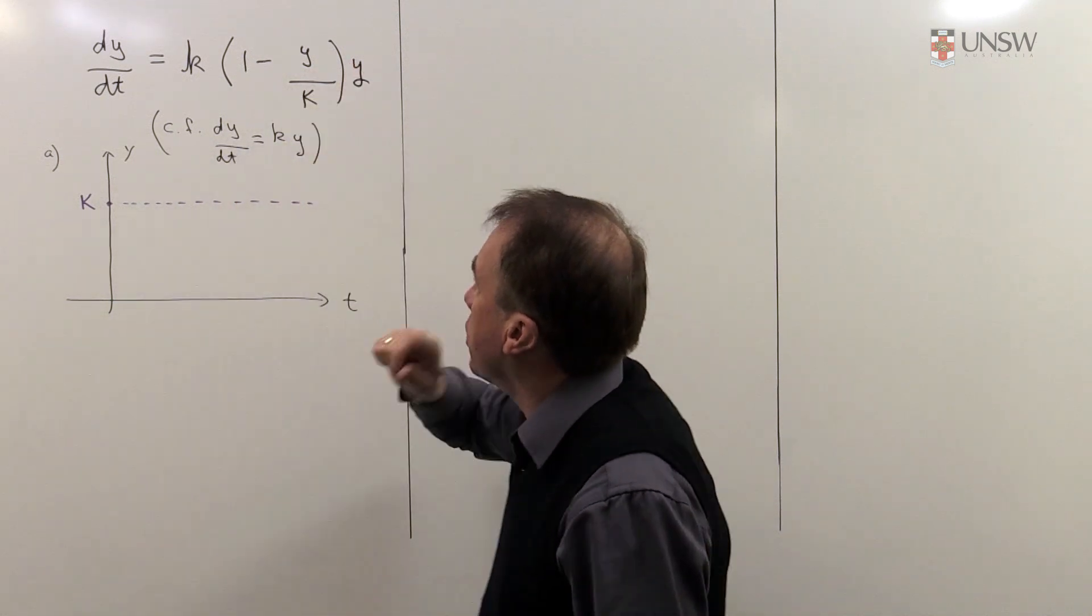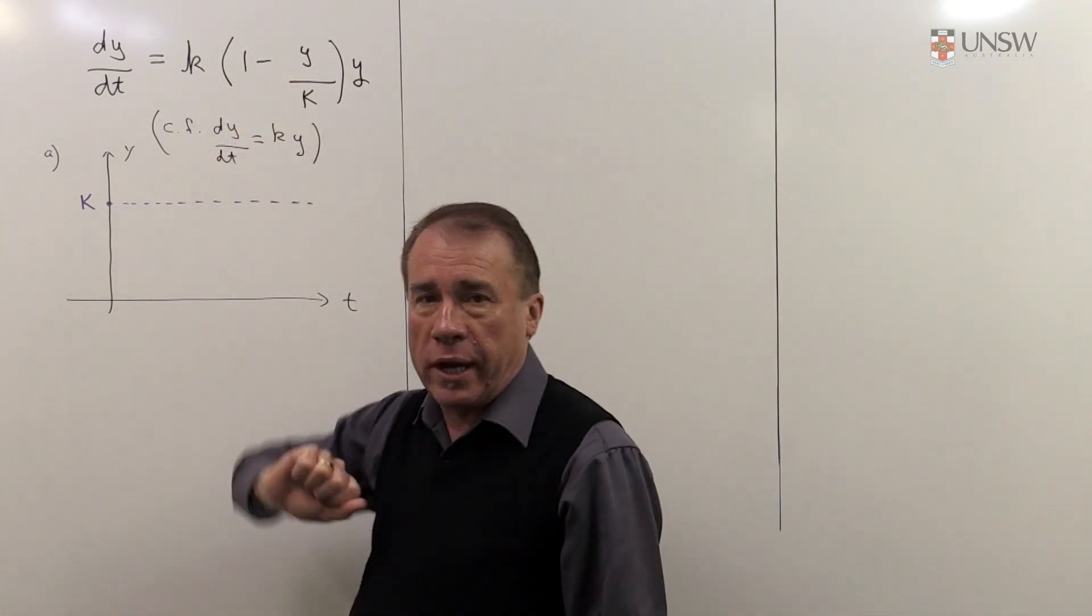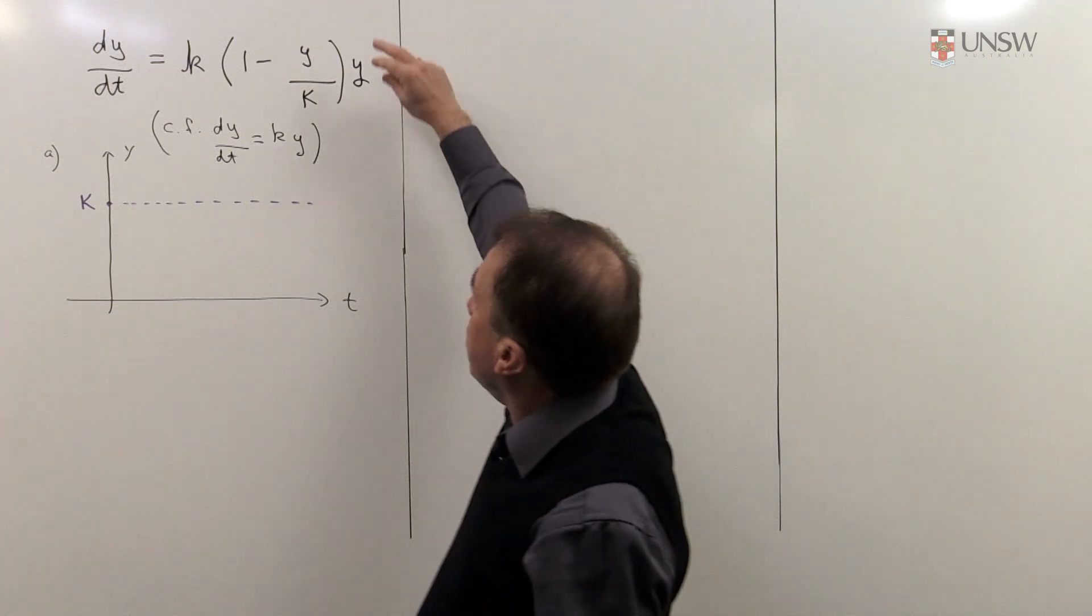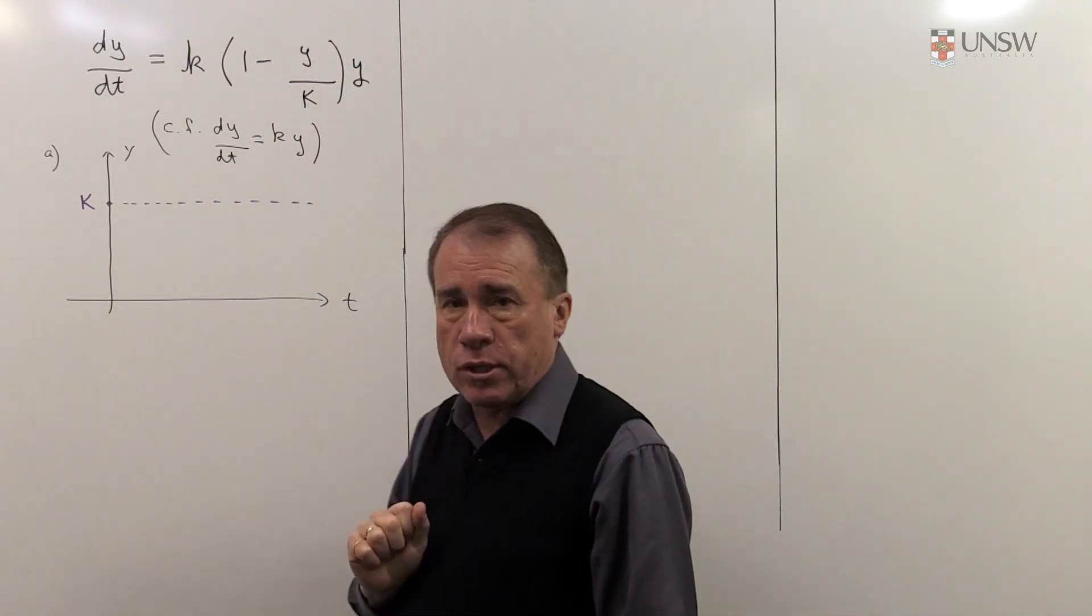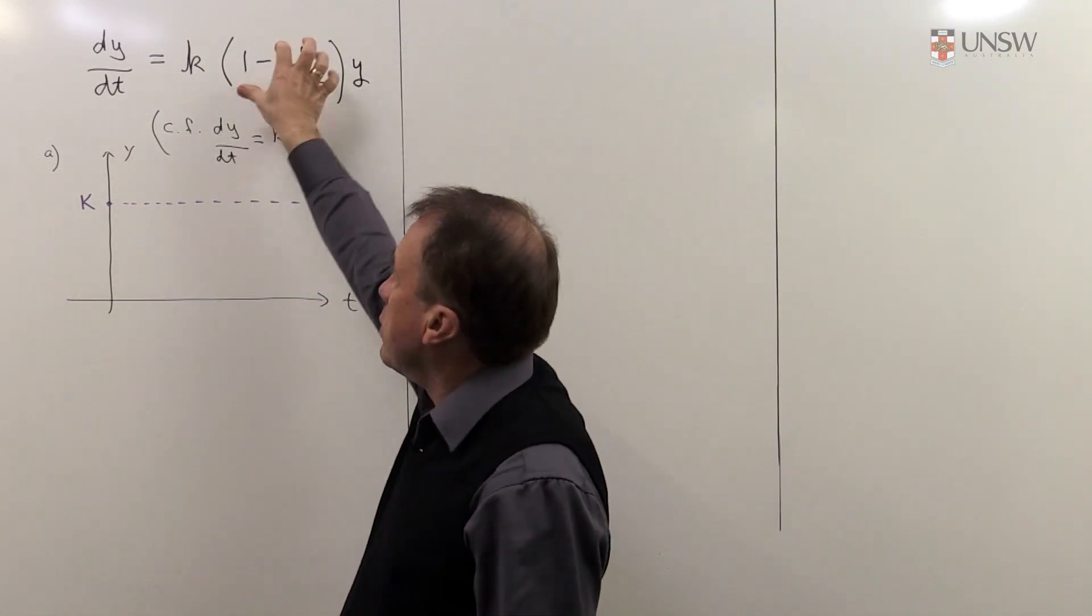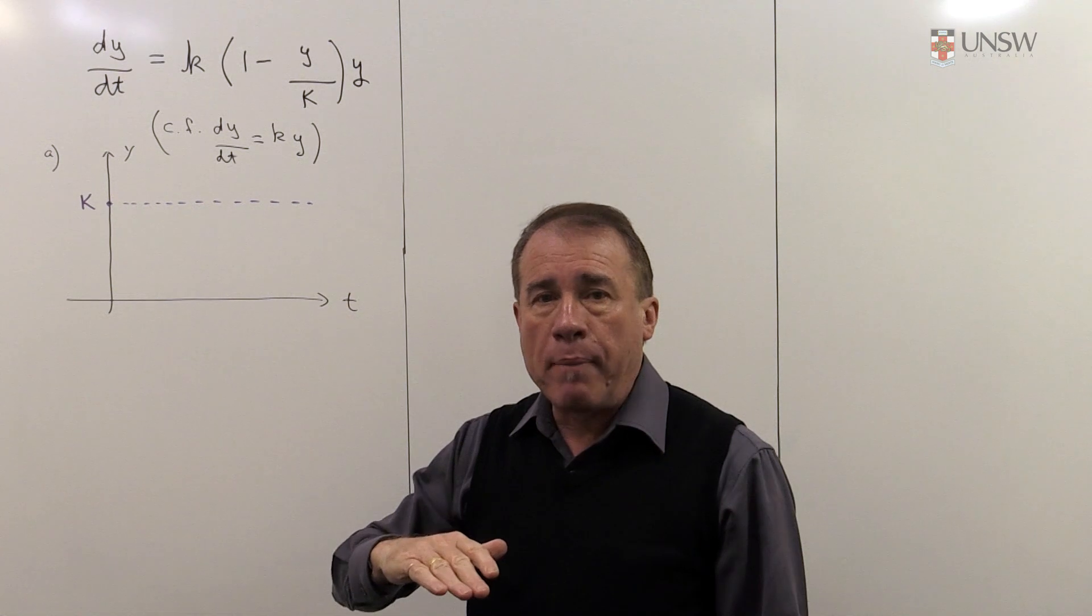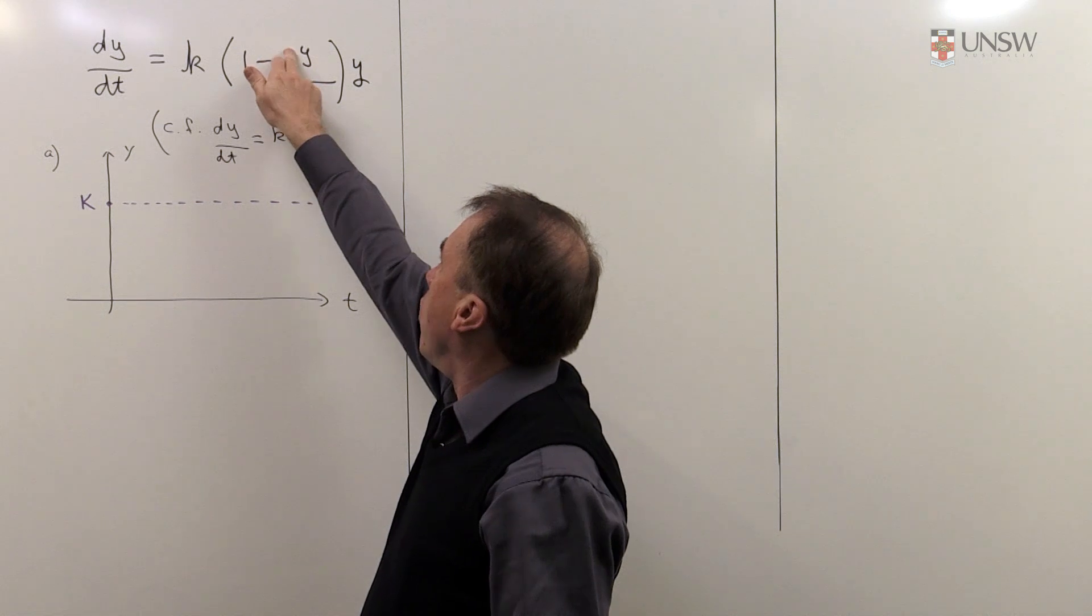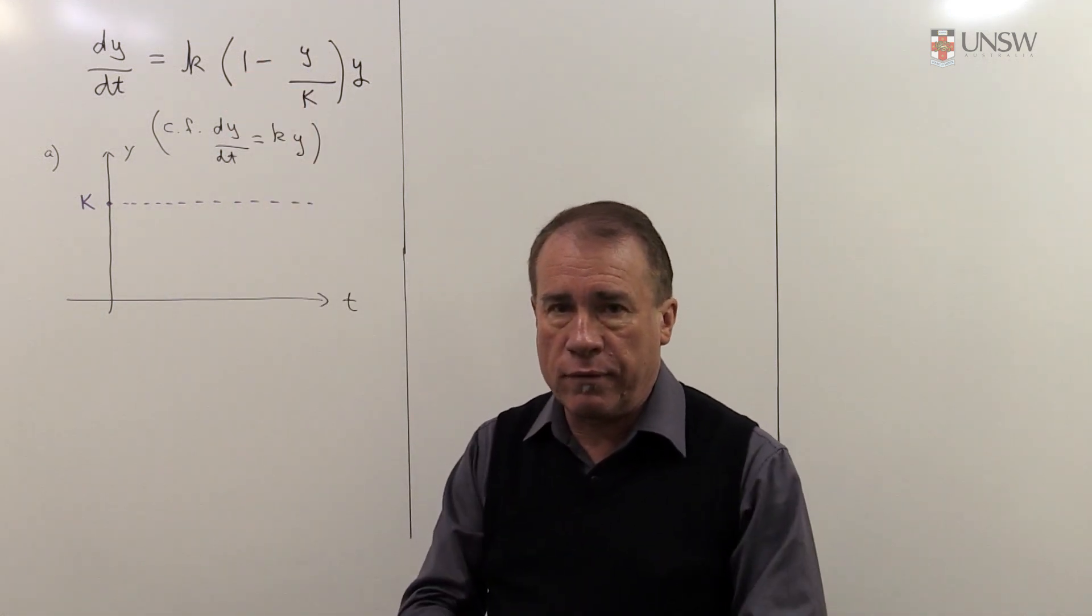Before we solve this equation, let us just enjoy this equation here and see why it is such a useful equation. Because if you look at it, when you take y to be equal to the value capital K, which is a constant, then the derivative suddenly becomes zero. So it kind of gives a bound on how big the population can be, that once y, if y happens to take the value capital K, then the population doesn't grow any further.